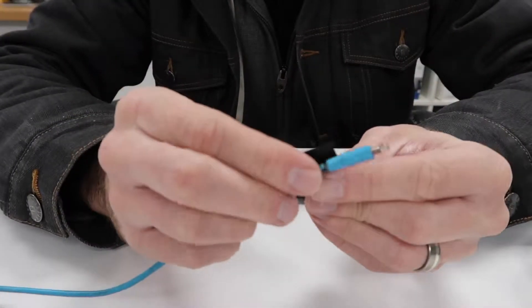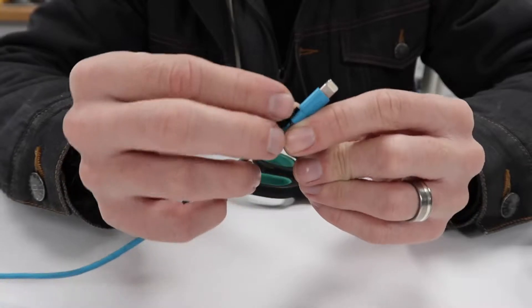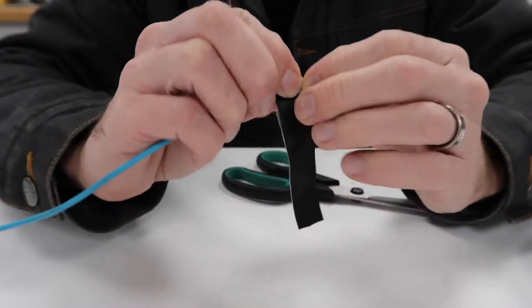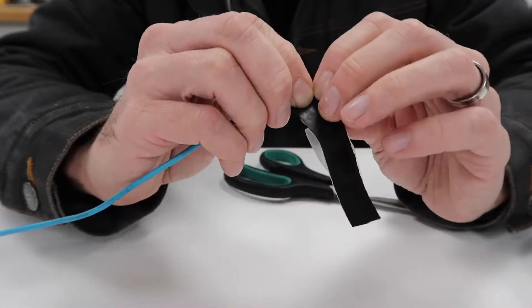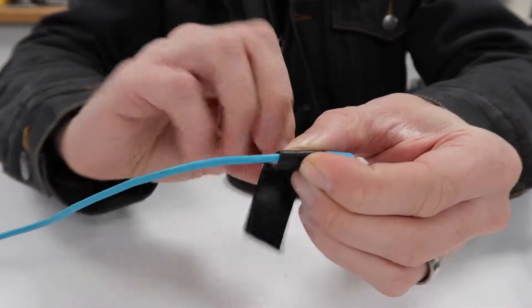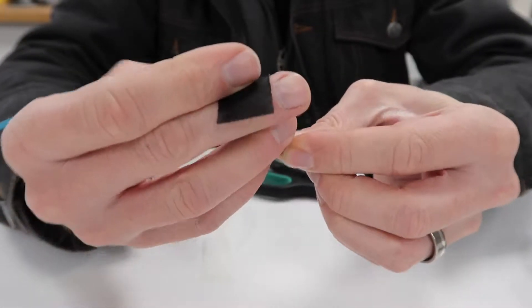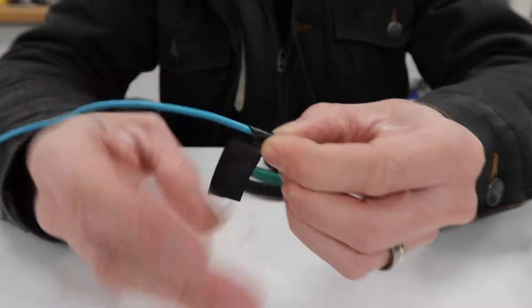Just get some of your tape and start wrapping it. Now you're going to need to, this is self-amalgamating, self-fusing. So basically you need to get it started and then you want to pull it fairly tight around your cable.